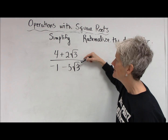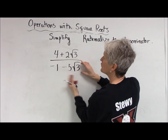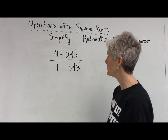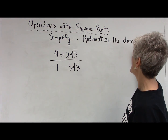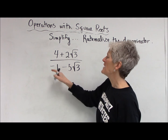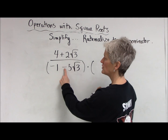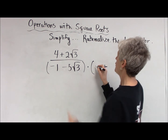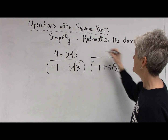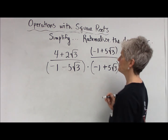You have to do the addition first, and the subtraction first, before you divide. When you have things added, you can't undo addition with division. I want to simplify this by rationalizing the denominator — I have a denominator with an irrational number. If I multiply by the conjugate, that will get rid of the square root. The conjugate is just changing that middle sign, so the conjugate of negative 1 minus 5 root 3 is negative 1 plus 5 times the square root of 3. I need to multiply the numerator by the exact same thing — I'm not changing the value.